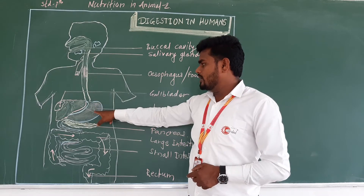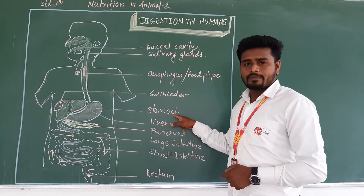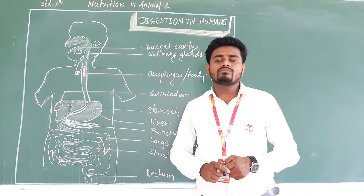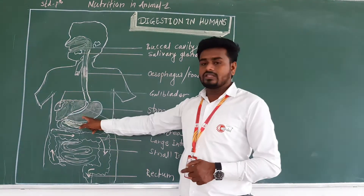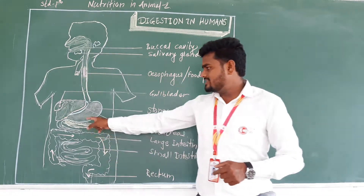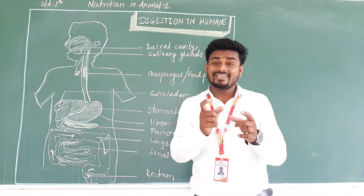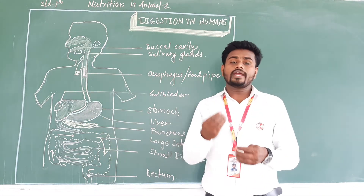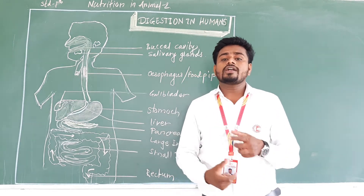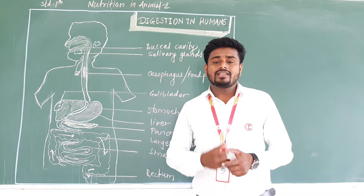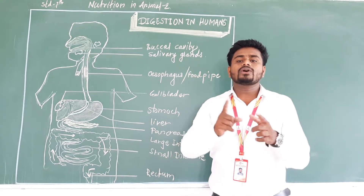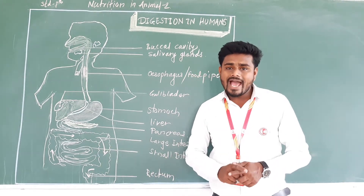From the esophagus, food goes into the stomach. The stomach is a sac-like muscular part filled with hydrochloric acid. When food enters the stomach, it gets churned, and during churning that food becomes acidic due to the presence of hydrochloric acid.